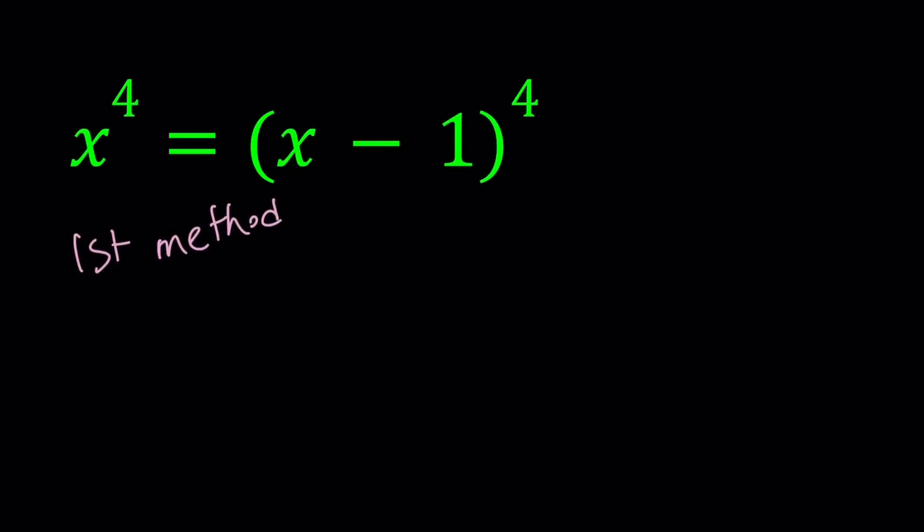So for the first method, we're just going to expand. We have x to the fourth. And on the right hand side, we have x minus one to the fourth power. How can I expand that? By using the binomial theorem. It becomes x⁴ - 4x³ + 6x² - 4x + 1.